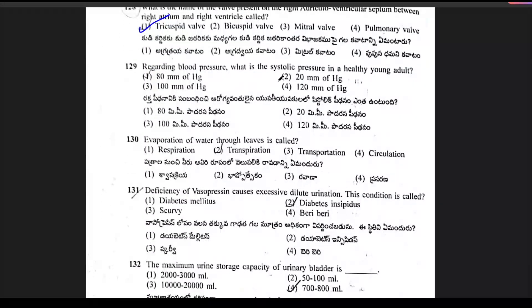Regarding blood pressure, question 129: what is the systolic pressure in a healthy young adult? It is nothing but 120 mm of mercury. Option 4 is the right answer.